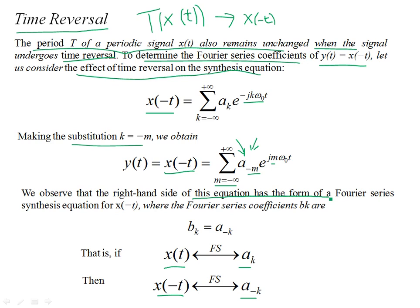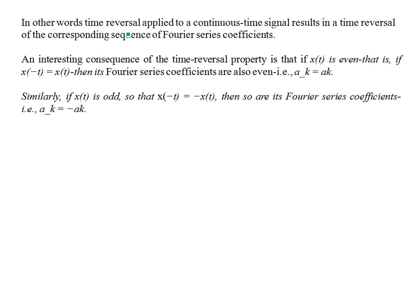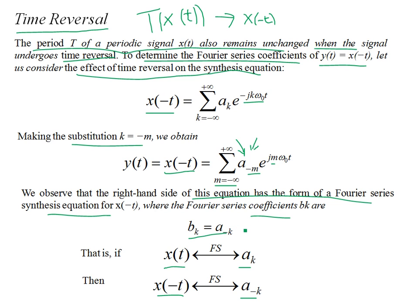The right-hand side has the form of a Fourier synthesis equation for x(−t), where the Fourier series coefficients b_k are simply time-reversed: b_k = a_{−k}. In other words, time reversal applied to the continuous-time signal results in the time reversal of the corresponding sequence of Fourier series coefficients — for example, a₁ becomes a_{−1}, and a_{−2} becomes a₂.